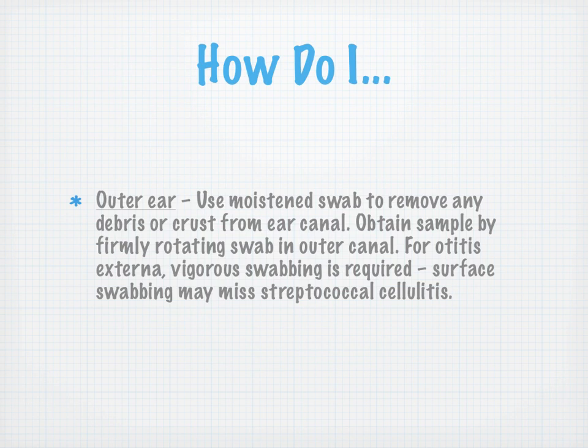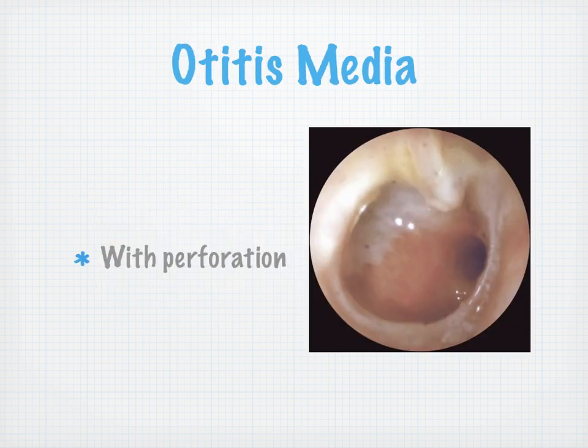The reality is you might need a culture in ear infection, particularly externa, so be prepared with proper equipment if you're in a primary care role. Use a moistened swab to remove debris or crust from the ear canal, then obtain the sample by firmly rotating the swab in the outer canal. For otitis externa, vigorously swab because otherwise you're going to miss strep cellulitis — and you don't want to miss that.